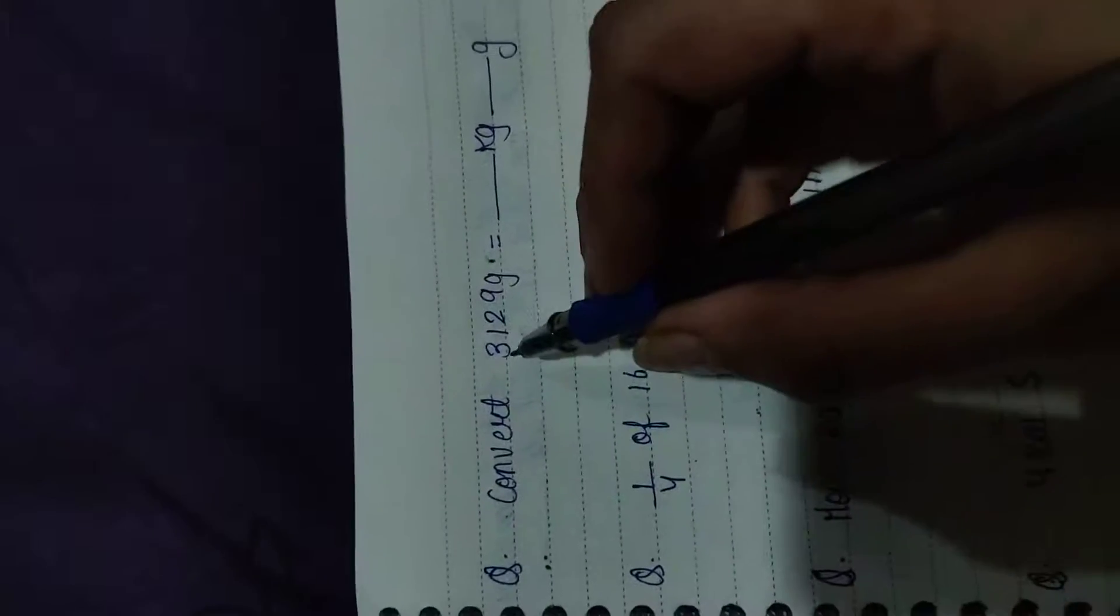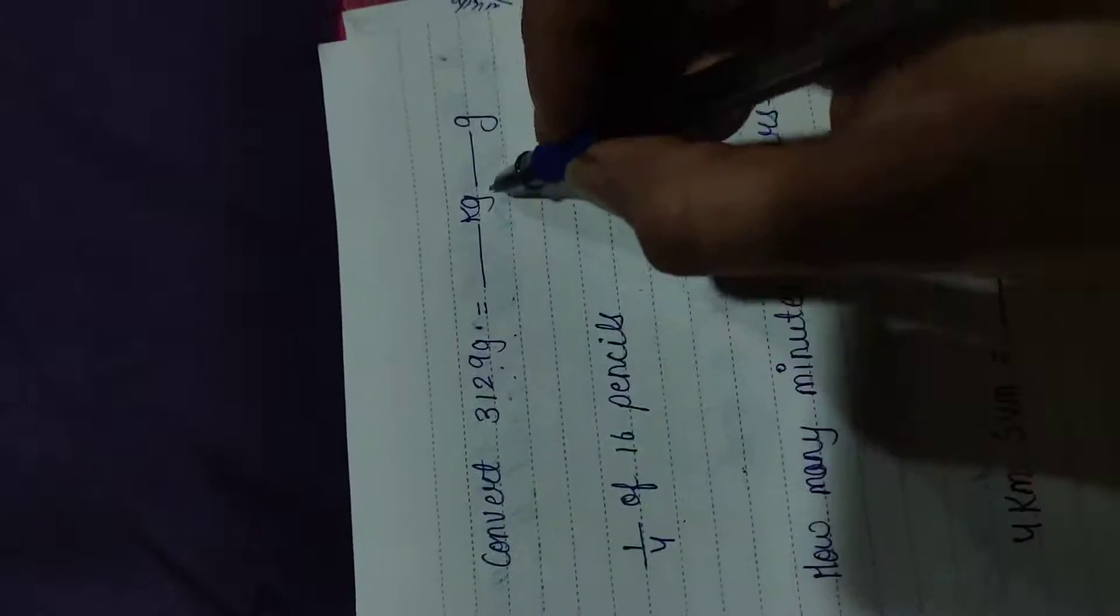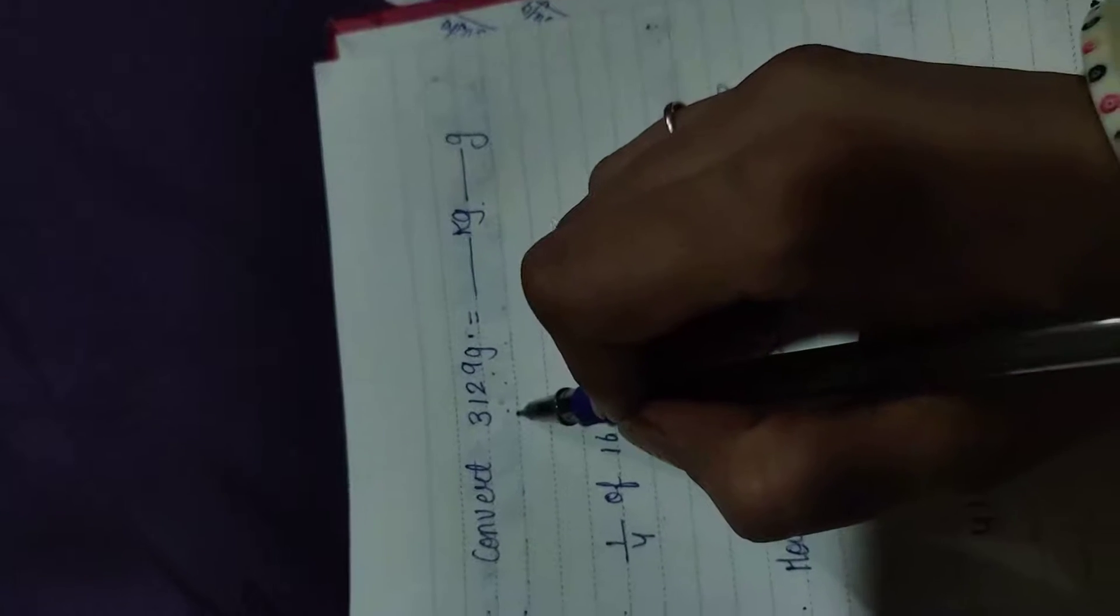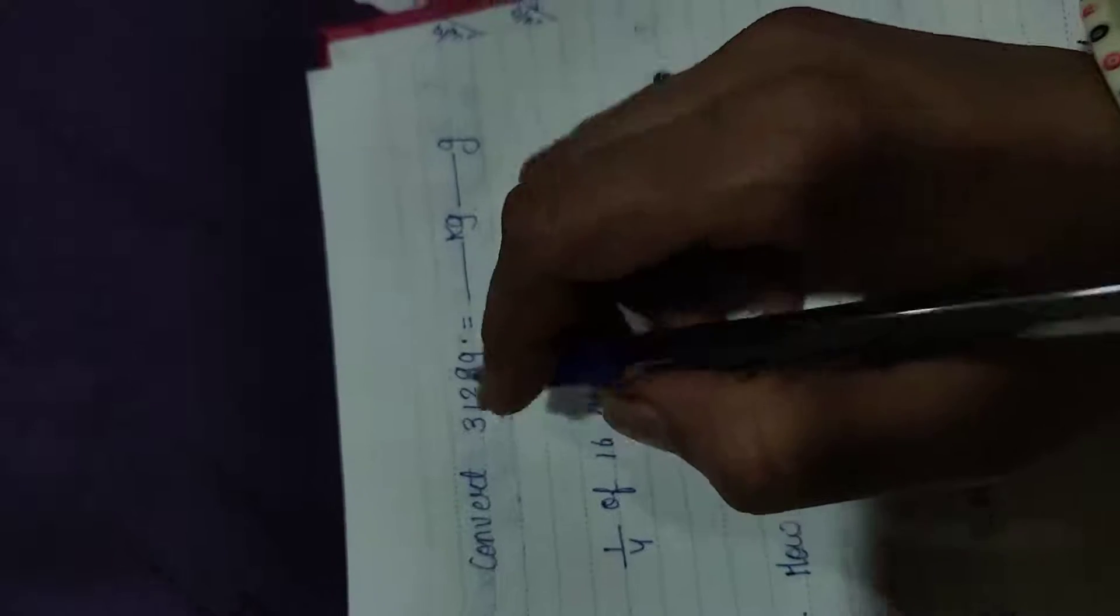Our first question is convert 3129 grams into kg and grams. You all know how many grams are in 1 kg? 1,000 grams. How many grams are in 3? 3,000. So we have 3 digits of our gram and the number of grams are in 1 kg.